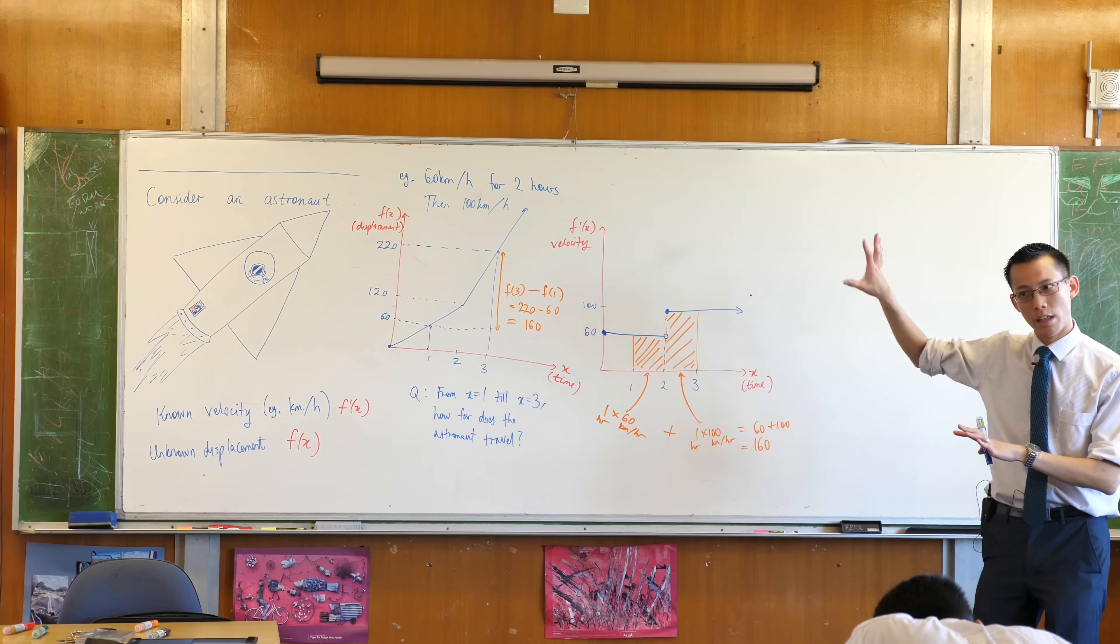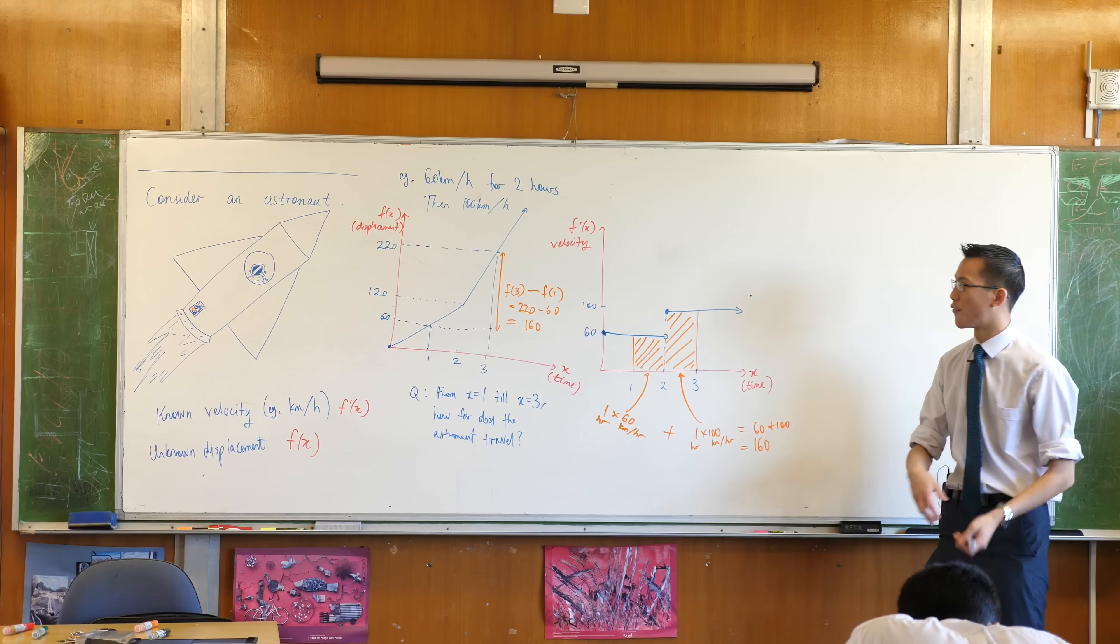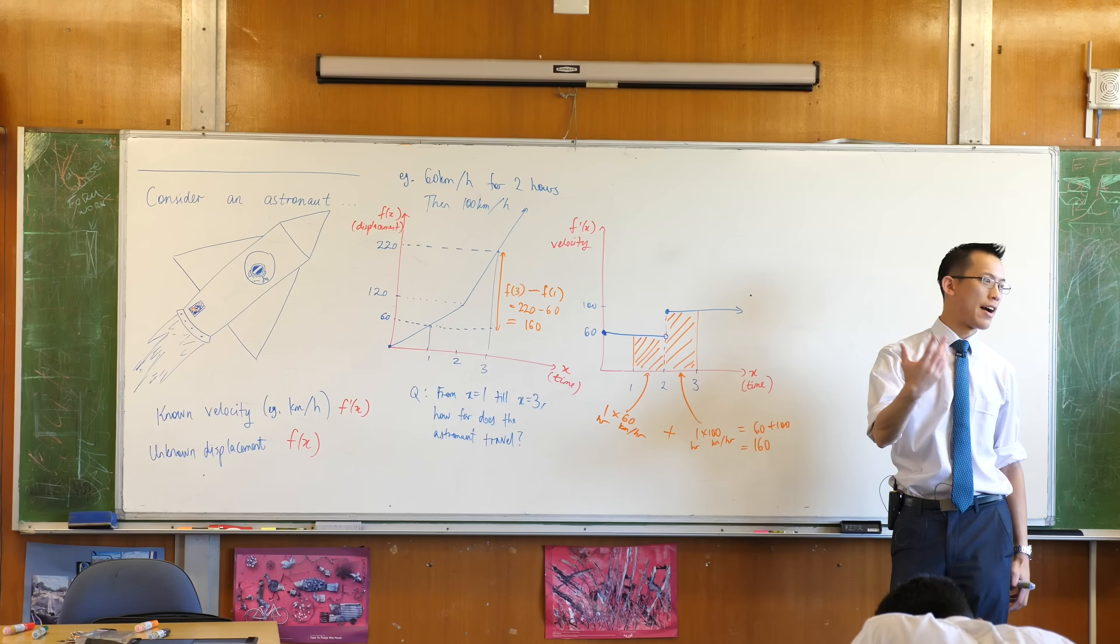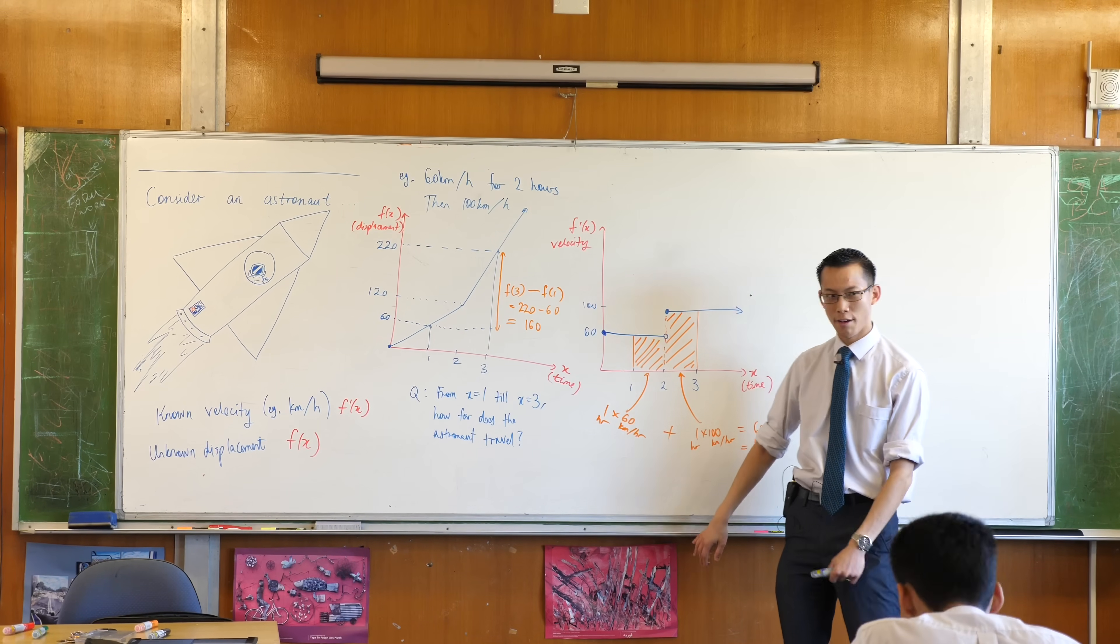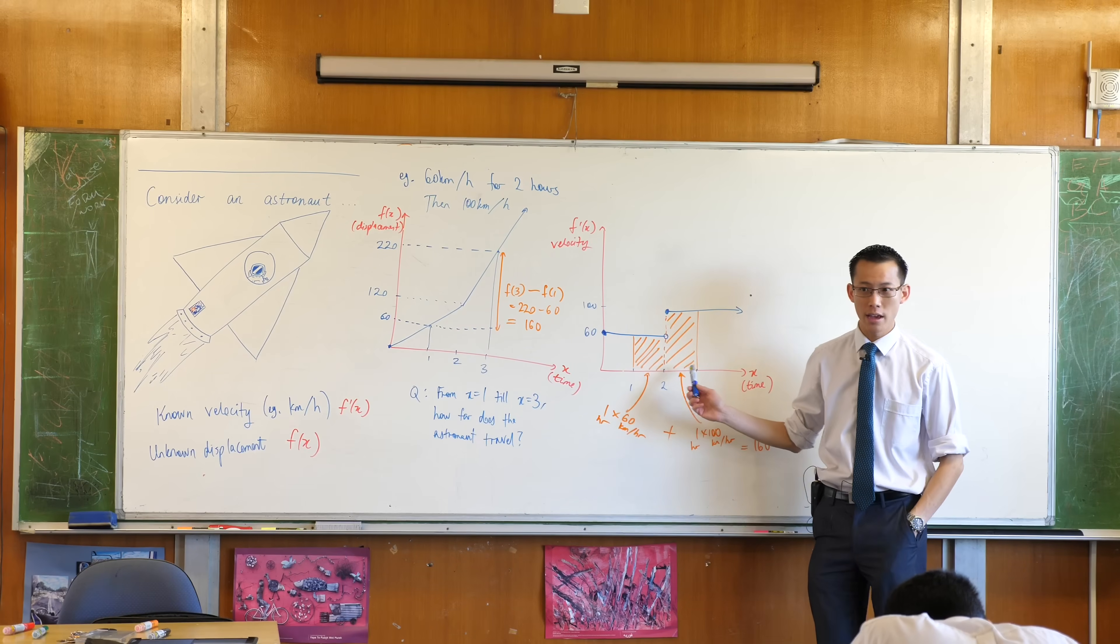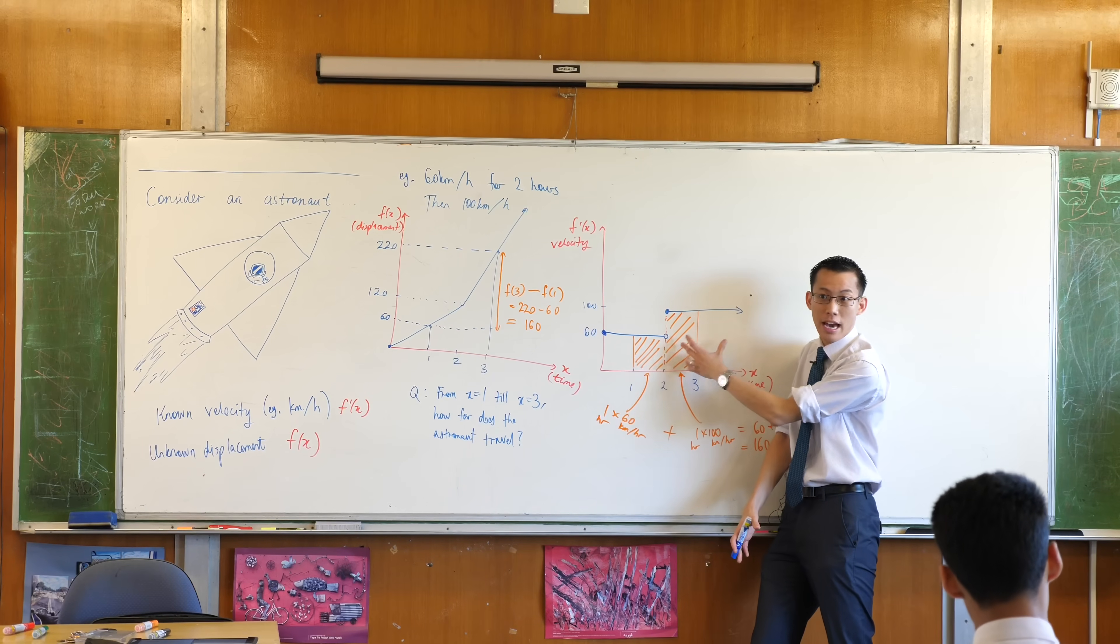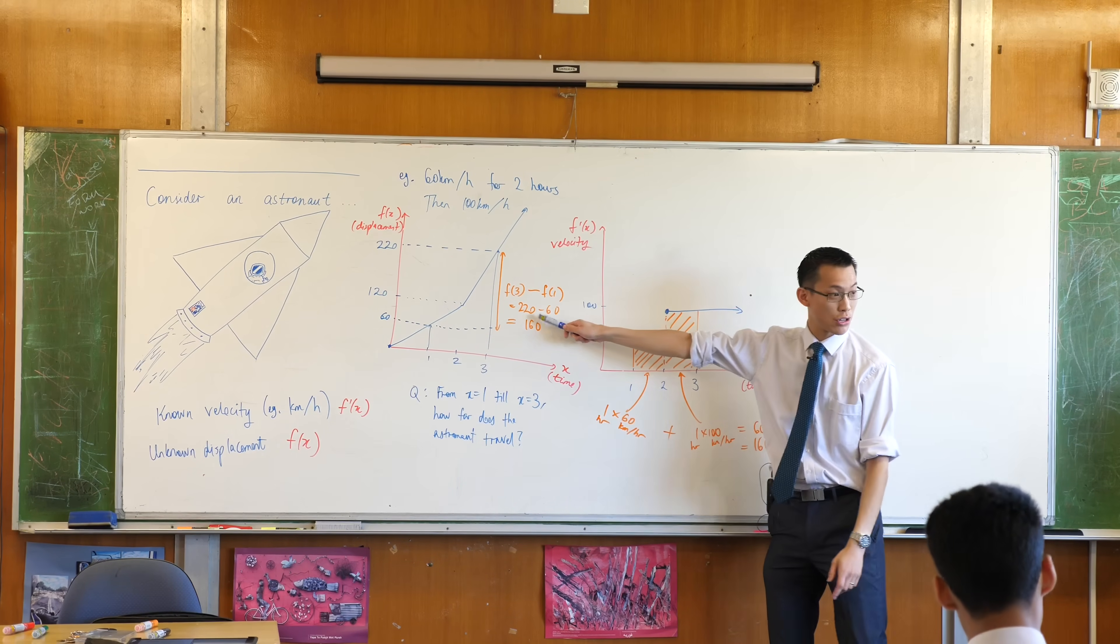Now, before I formalize this and put some notation around it, just imagine if it wasn't such a simple journey. What if it wasn't 60 kilometers exactly for two hours - what if it was 35 kilometers for two minutes and then 71 kilometers for 45 seconds, and it just kept changing? I could still do this - it would just be messier, but the same thing, just more calculations. In principle, the idea is sound: working out areas gives you a total change.